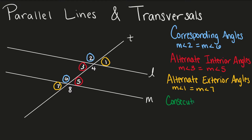Lastly, angle 4 and angle 5 are consecutive interior angles. These angles are on the same side of our transversal and are on the inside of our parallel lines, so they are consecutive interior angles. Consecutive interior angles add up to give us 180 degrees, so the measure of angle 4 plus the measure of angle 5 equals 180.